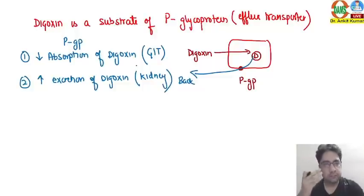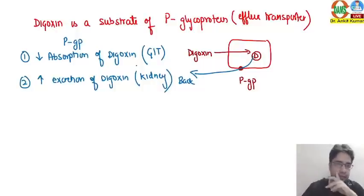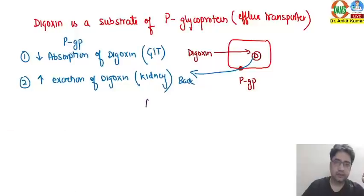P-glycoprotein decreases the absorption of digoxin because it is present in the GIT, and it increases the excretion of digoxin because it is also present in the kidney. Overall, the function of P-glycoprotein is to remove the drug out of the body or reduce absorption. Certain drugs can increase or decrease the activity of P-glycoprotein.